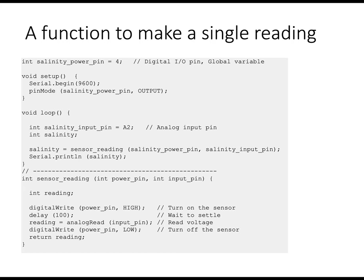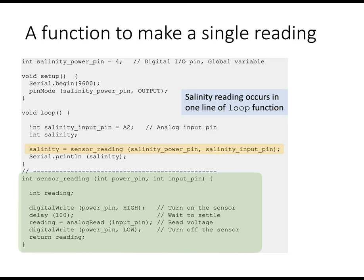So this is what it looks like to make a single reading. This is a complete program, setup, loop, and now a new function called sensor reading. The yellow box in the loop function is where the sensor reading happens and the actual details are performed in the green box. So you can just sort of look at the loop function now has just a few lines. And the single statement actually makes multiple things happen, which are down in the green box in the loop function.